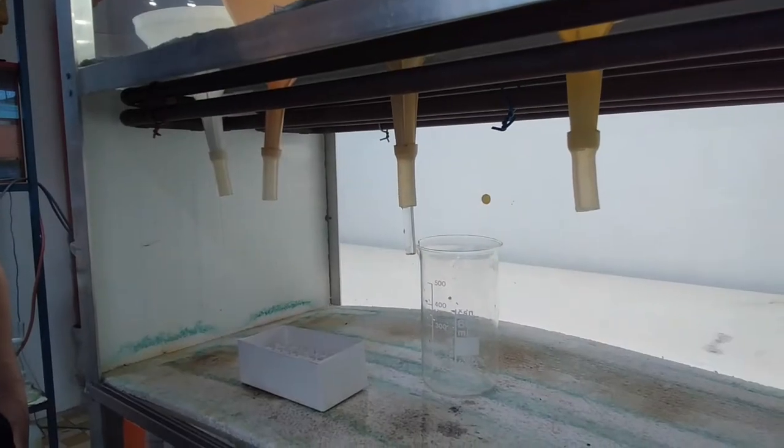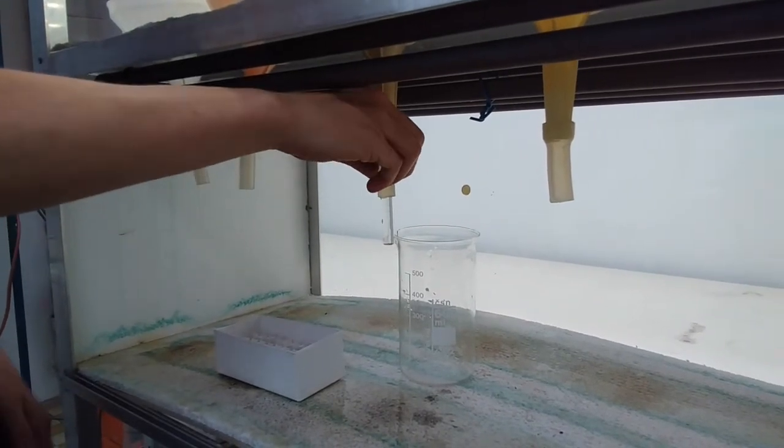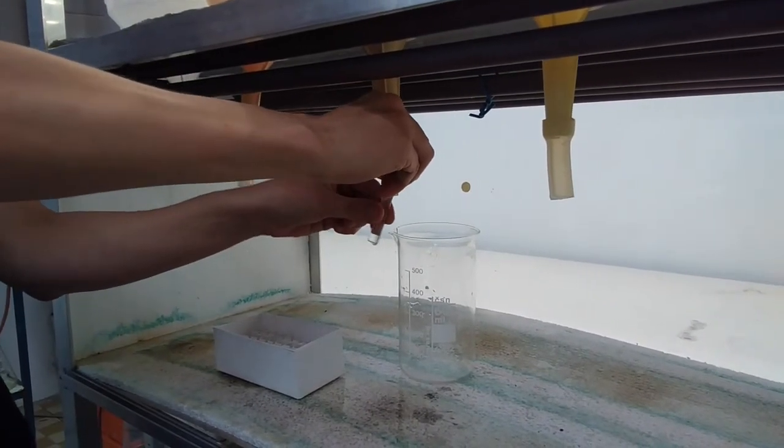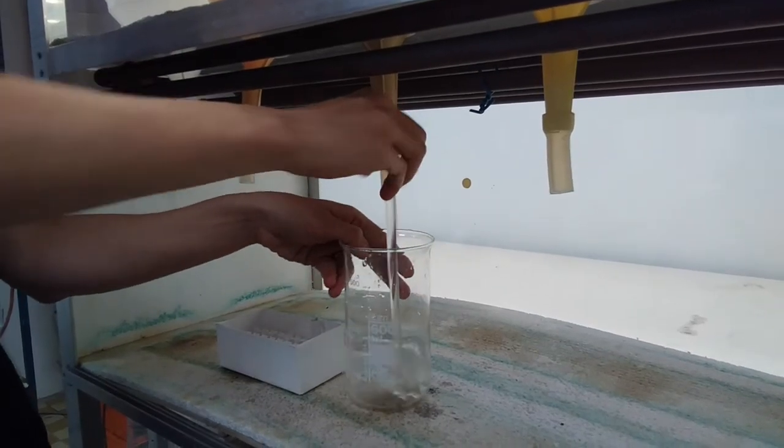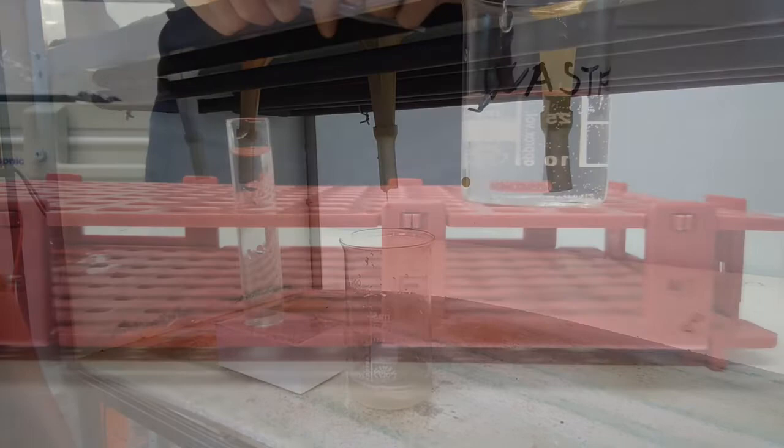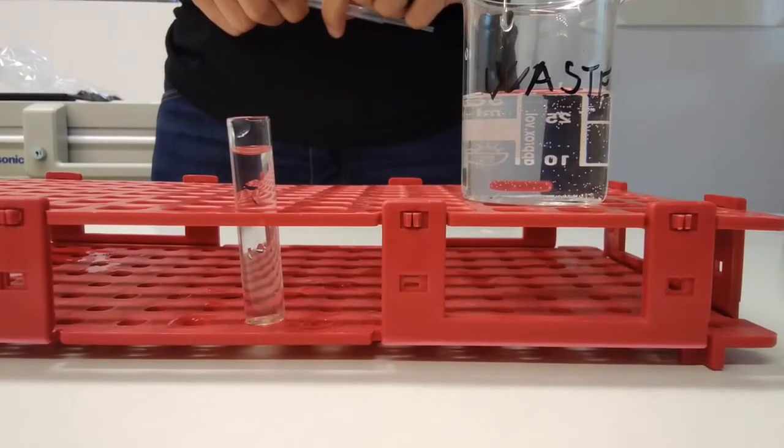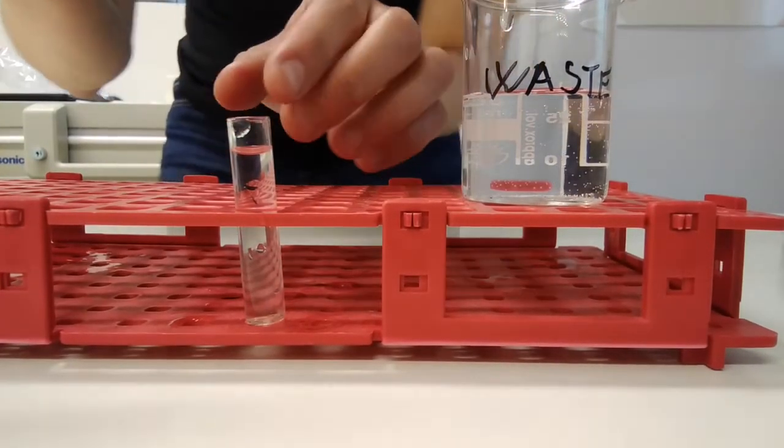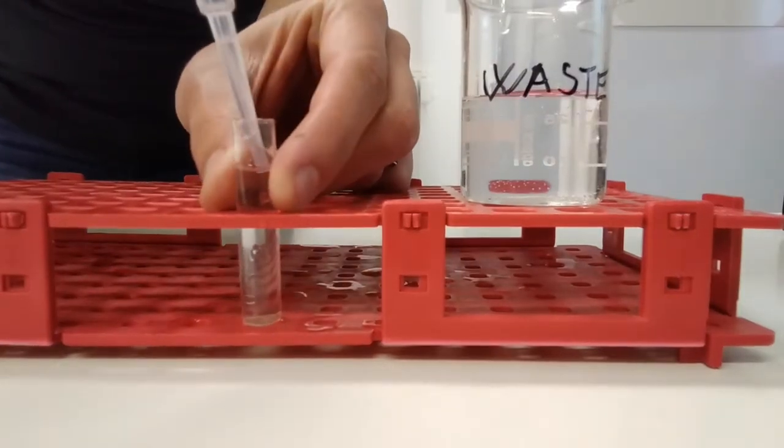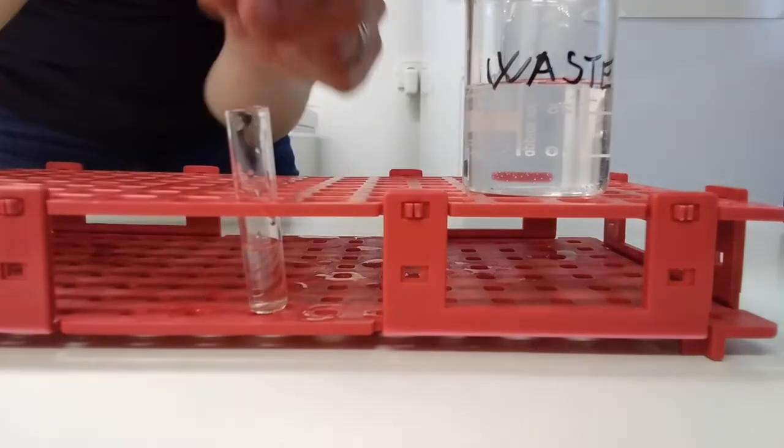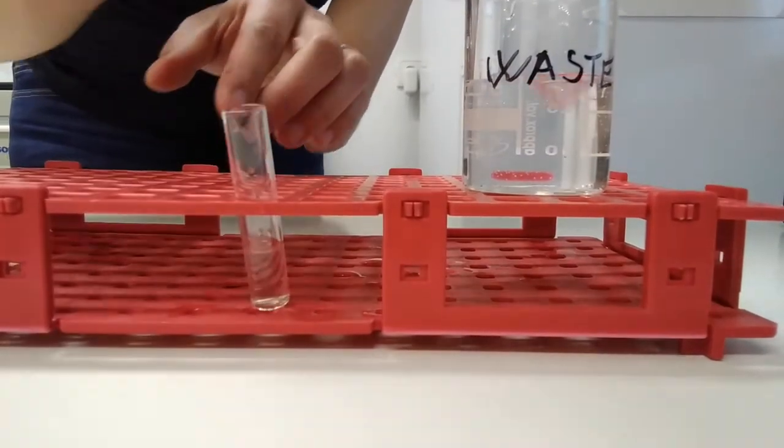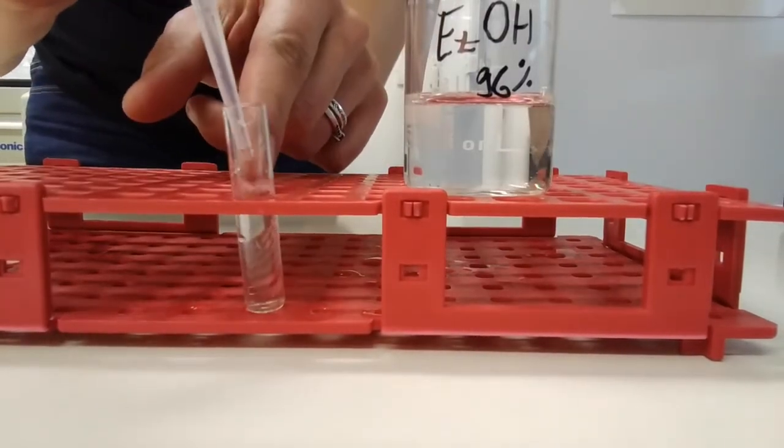To remove the extracted animals, strangulate the hose with your fingers. Gently remove the vial and discard the rest of the water in a waste jar. Now we fix animals in ethanol. All animals are at the bottom of the vial, so we carefully remove three quarters of water from the top of the vial and fill the vial with 96% ethanol.